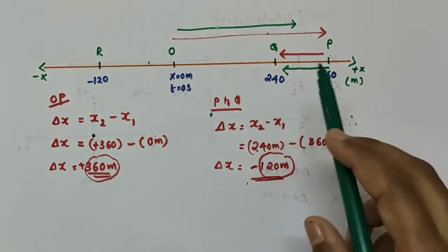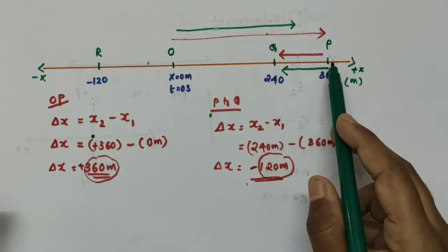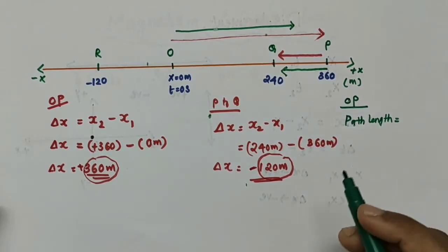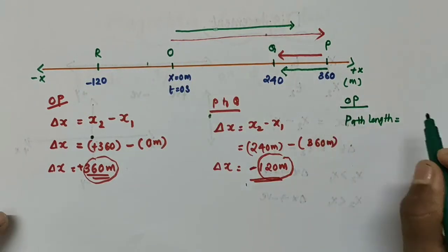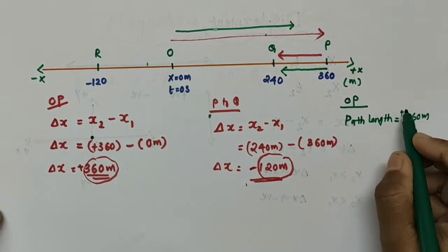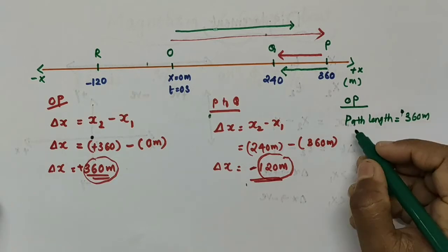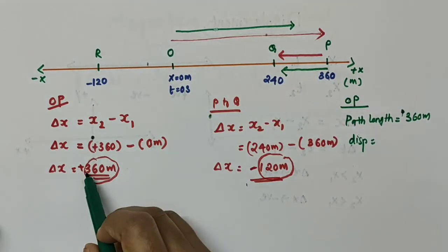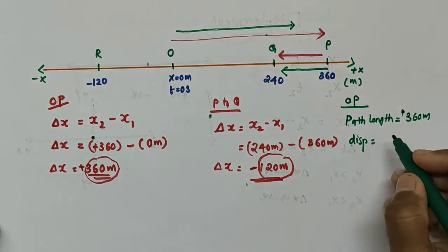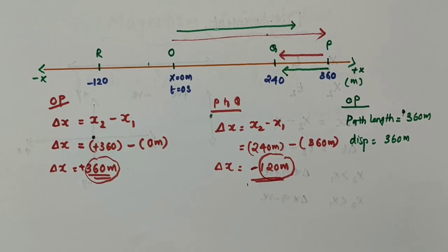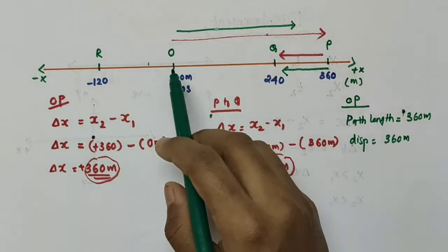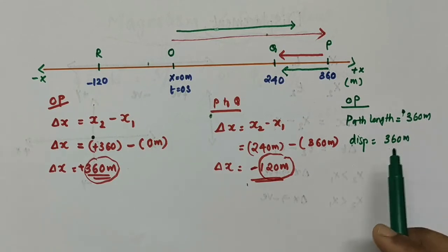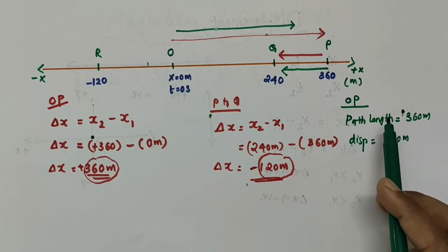Consider the motion of the car from O to P. The path length is 360 meters — the total distance traveled. The displacement is x2 − x1 = 360 − 0 = 360 meters. So in this case, the magnitude of the displacement equals the path length traversed by the object.